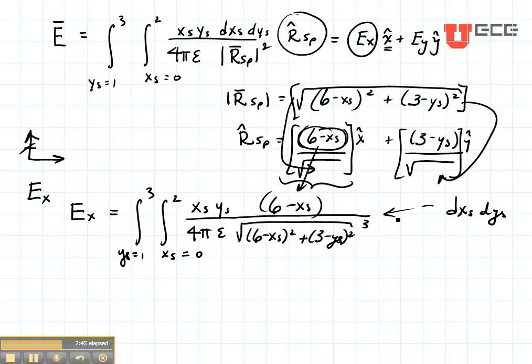What if you wanted to find the part for EY instead? Go back up where your vector is — the only vector is this unit vector. Here's its Y component, and you substitute that in instead of the X component.